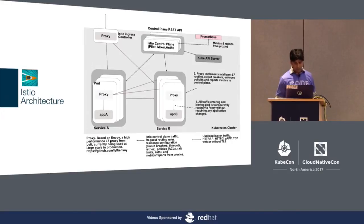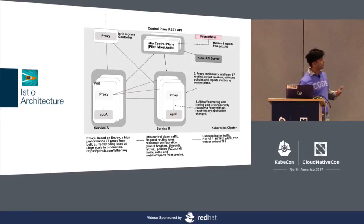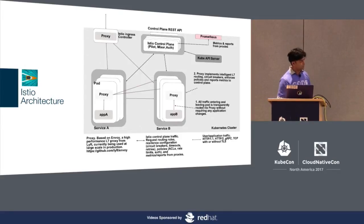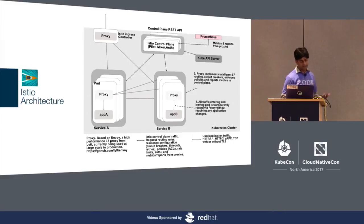All traffic entering and leaving is intercepted by Envoy. Envoy is a layer 7 proxy developed by Lyft — a very high-performing proxy able to handle up to five million requests per second. You also have an ingress proxy as the gateway to your application. You can use Envoy for that, or Kubernetes ingress controllers, and NGINX has also announced support. gRPC, HTTP/2, and HTTP/1 are all currently supported by Istio.